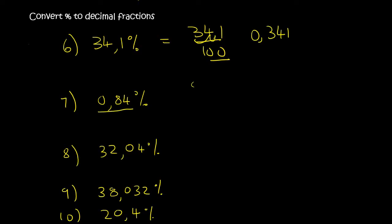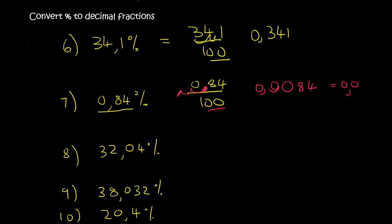This one looks interesting: 0.84%. You keep it as 0,84 over 100 — that's always what we do. Then you move it two decimal places: 1, 2. So you end up with a comma over here, then an empty space, then a zero, then an 8 and a 4. In the empty space you put a 0, and in the front you put a 0. So the answer is 0,0084.